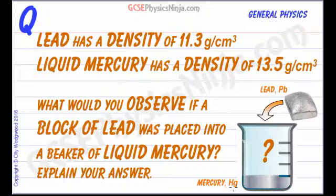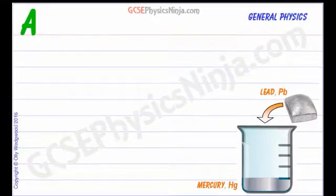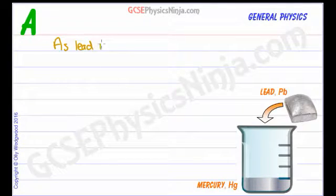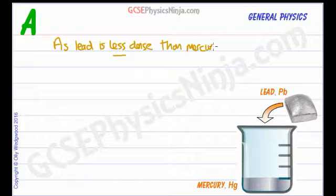Here's some lead with the symbol Pb, and we're going to put it into some mercury with symbol Hg. So the simple answer to this is that as lead is less dense than mercury, it will float.